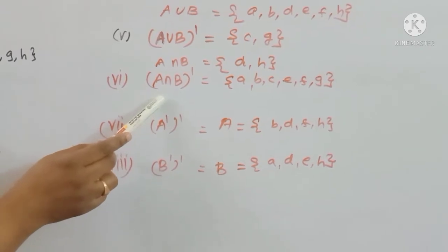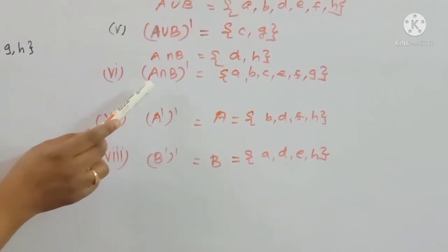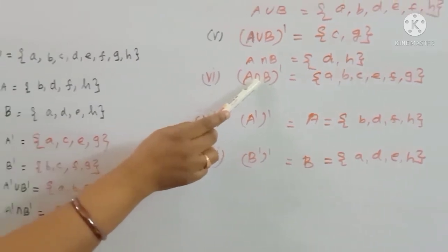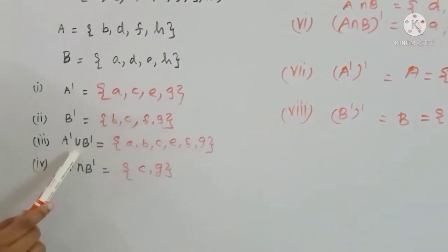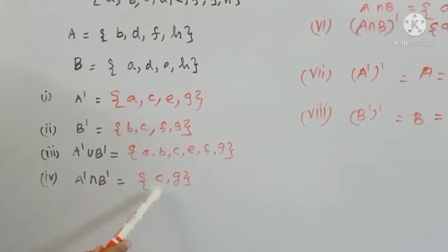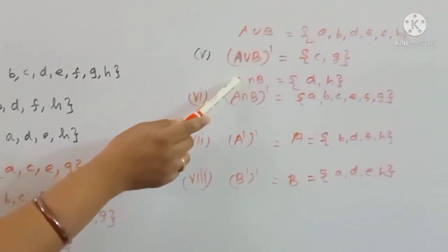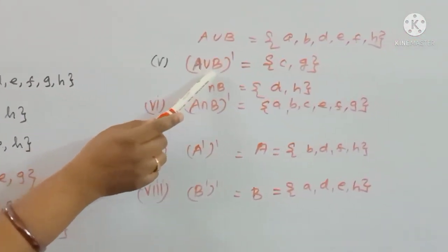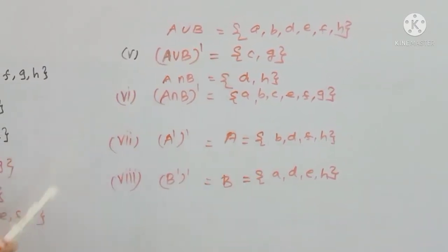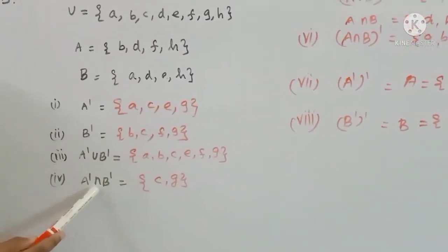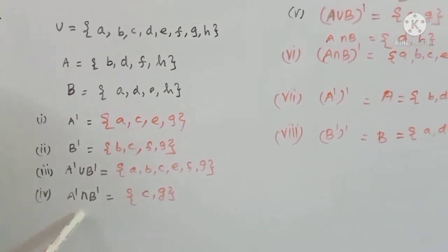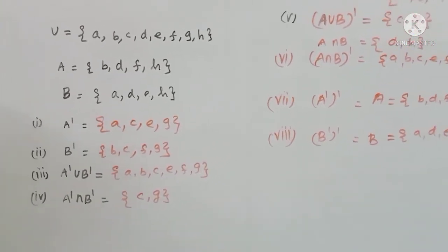This is De Morgan's Law for the complementation of sets. A intersection B whole dash equals A dash union B dash. A union B whole dash equals A dash intersection B dash.